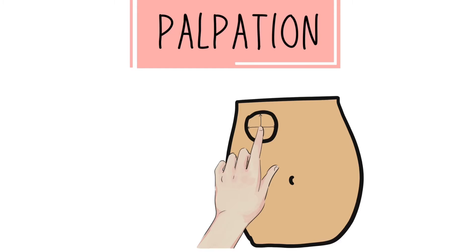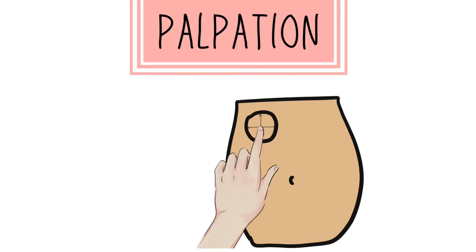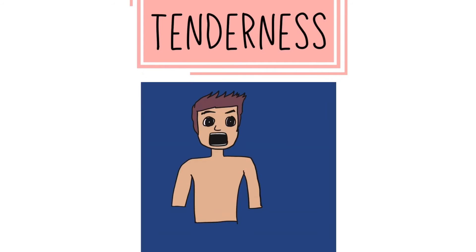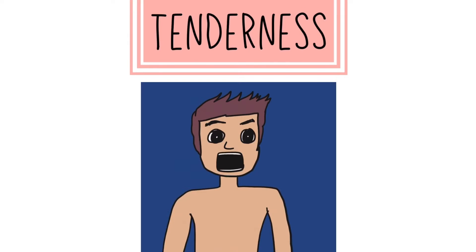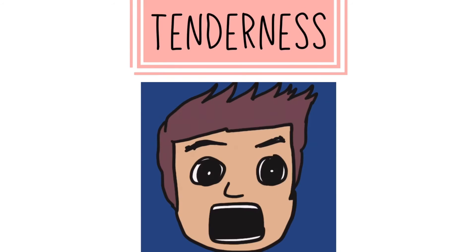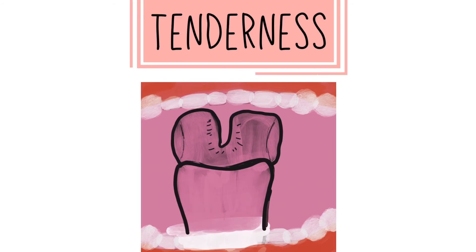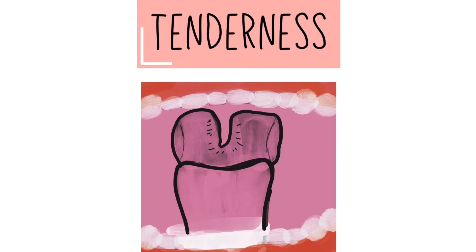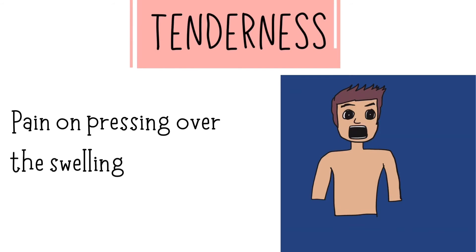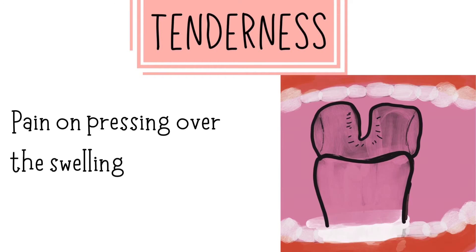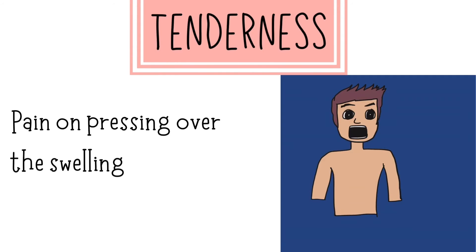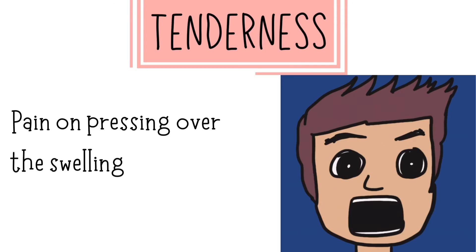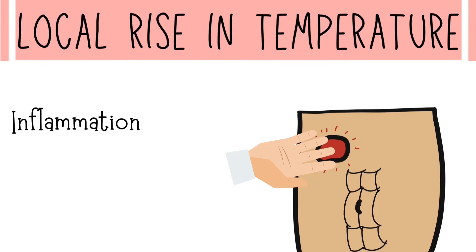Moving to palpation, we confirm the findings of inspection and discover additional findings. First is tenderness — we put pressure over the swelling and observe changes in the patient's facial expression indicating pain, rather than directly asking the patient. We distract the patient by asking some history while observing facial expression changes. If there are changes, it indicates tenderness. We also feel for any local rise in temperature, which denotes underlying inflammation.